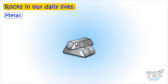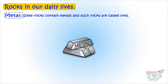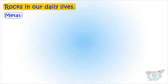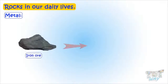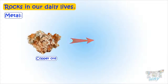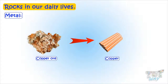Some rocks contain metals, and such rocks are called ores. Metals are extracted from these ores using various processes. For example, iron ore is used to make iron and steel, and copper is extracted from copper ore.